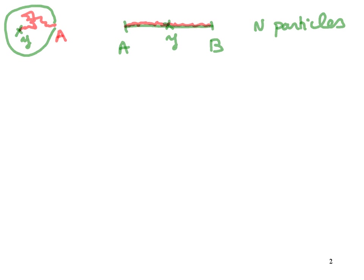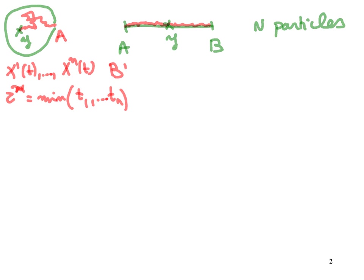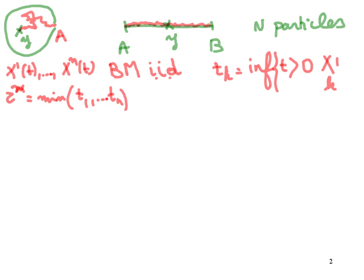Specifically, we consider n particles that are Brownian particles: x₁(t), ..., xₙ(t), and we would like to look at the statistics of τₙ, which is the minimum of t₁, ..., tₙ. Suppose these n particles are all Brownian motion. They are identically independently distributed, which is called IID, and each time tₖ is the first time that particle xₖ(t) reaches the absorbing boundary ∂Ω.